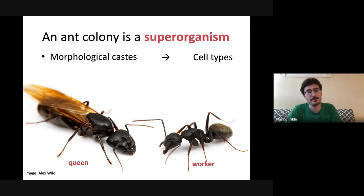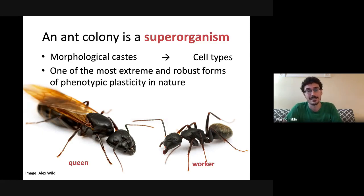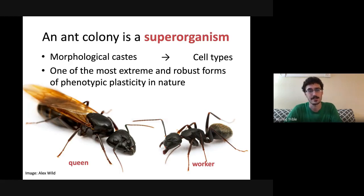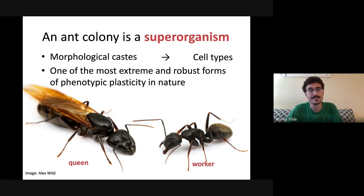Like cells, the development of ant larvae into alternative castes is not an outcome of fixed genetic differences but typically of phenotypic plasticity — epigenetic or environmental influences cause larvae to attain distinct caste morphologies. The morphological castes of ants are one of the most extreme and robust forms of phenotypic plasticity in the natural world. In some ways, the castes of ants give us a window into how a single genome can produce distinct output phenotypes — a step on the path toward the massive complexity of cell types in an animal body.